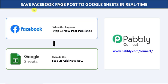Hello everyone. In this video, we will learn how to save Facebook page posts to Google Sheets in real time. The idea is that if I create a new post in Facebook, the data of that particular post will be added into Google Sheets automatically. But there is no direct connection between Facebook and Google Sheets, so I will be using an integration and automation software called Pabbly Connect. The best part is a person without any technical background can perform this integration easily.